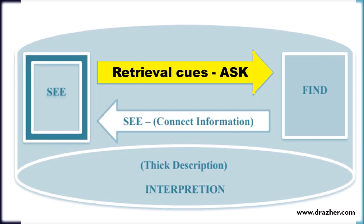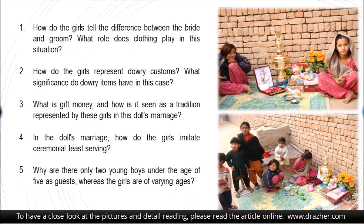After looking at the picture and writing a description, I move to the second step — asking questions about information that requires an answer but was not explicitly available in the picture's content. After observing and describing the picture, I have a few questions: How do the girls tell the difference between the bride and groom? What role does clothing play in this situation? How do the girls represent dowry customs, and what significance do dowry items have? What is gift money and how is it represented as a tradition in the doll's marriage? How do the girls imitate the ceremonial feast serving? Why are there only two young boys under the age of five as guests, whereas the girls are of varying ages?